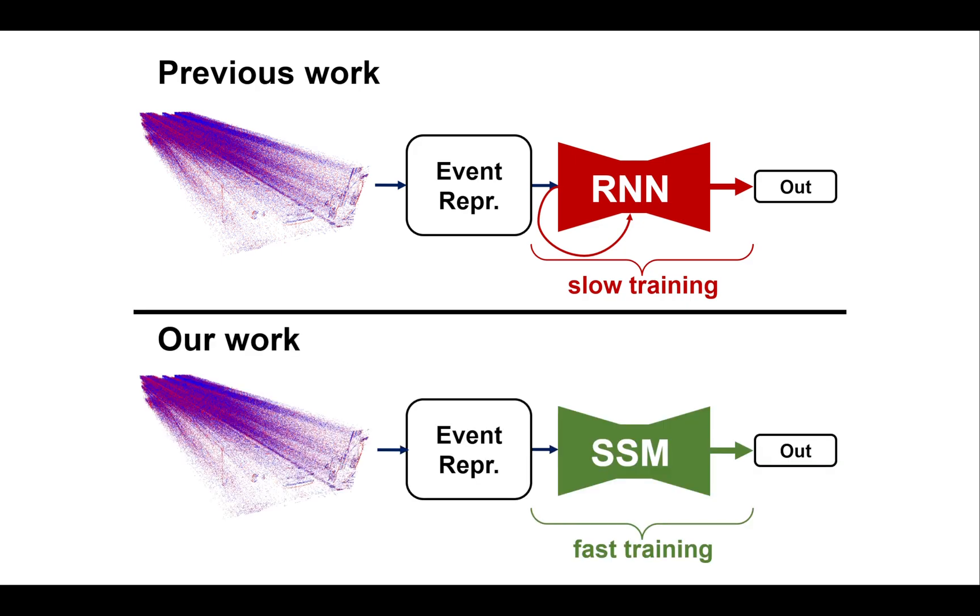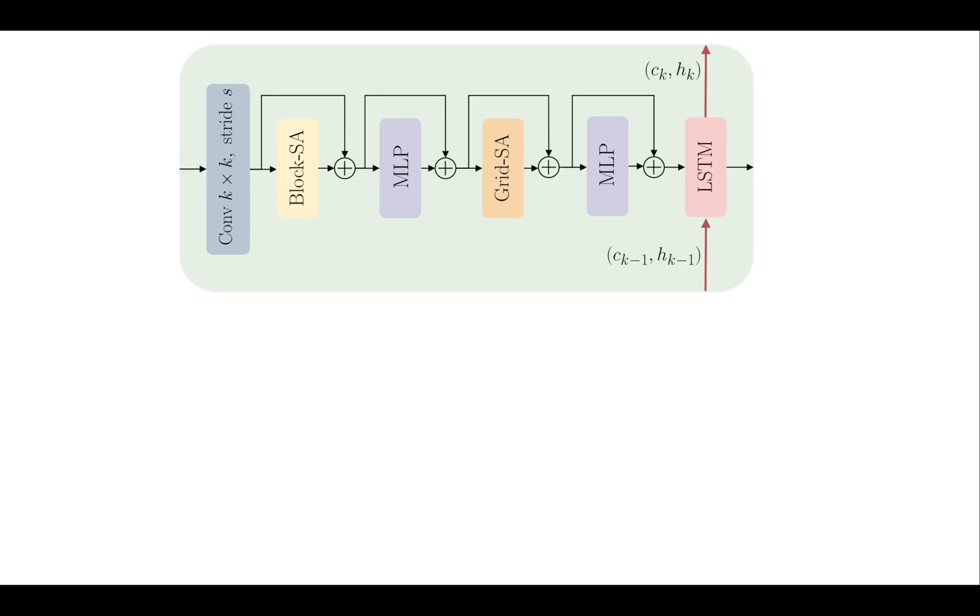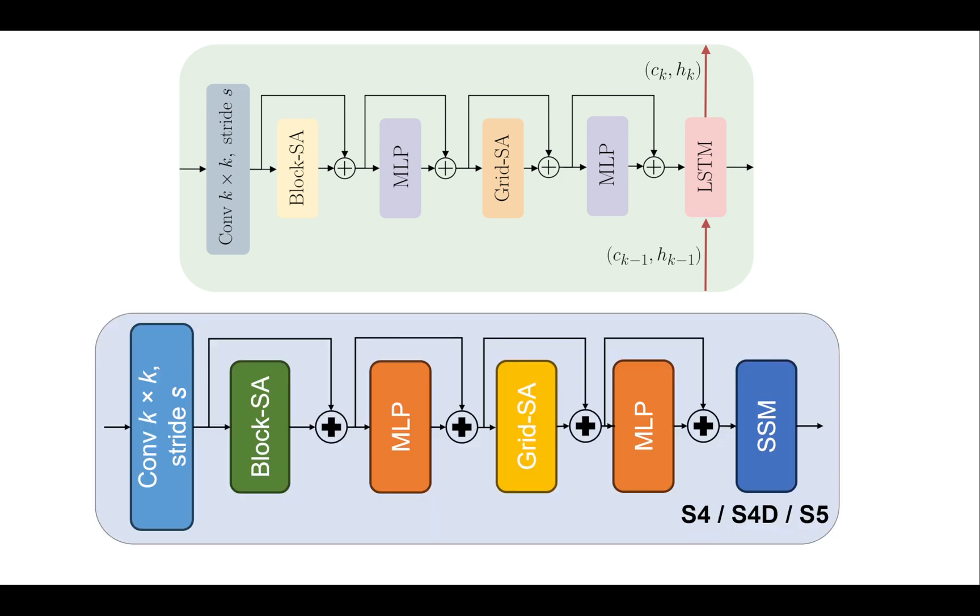We propose using SSMs to solve these issues. For spatial processing, we still use convolution for downsampling and attention. However, for temporal processing, we replace RNNs, specifically LSTM, with SSM.